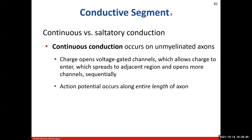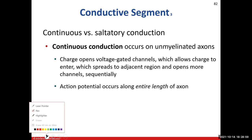There are two types of conduction down the axon. Continuous conduction does not involve the myelin sheath and occurs in unmyelinated axons. One voltage-gated channel opens, triggering the next, then the next — a sequential process spreading from one region to an adjacent region, occurring down the entire length of the axon.